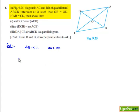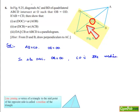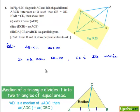Now let us consider triangle DBC. Since OB is equal to OD, therefore we can say that CO is a median of triangle DBC.